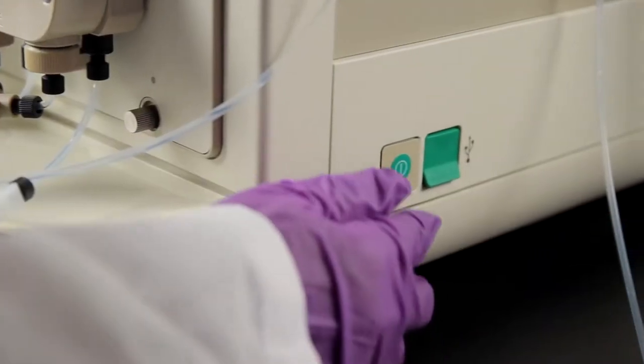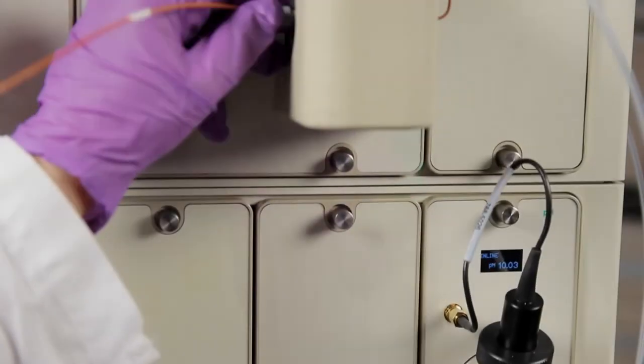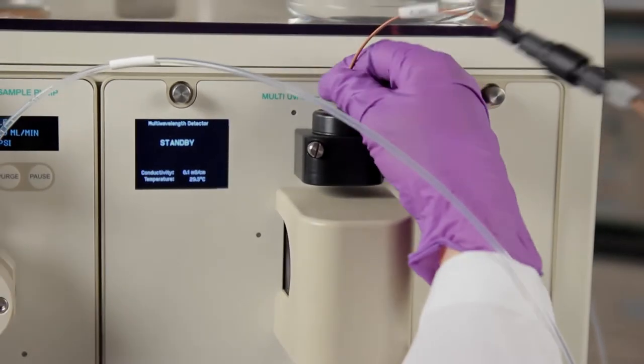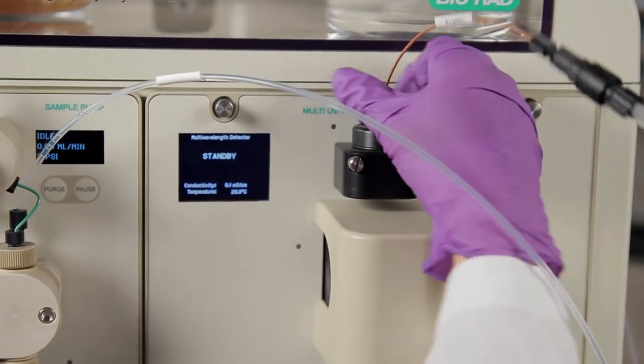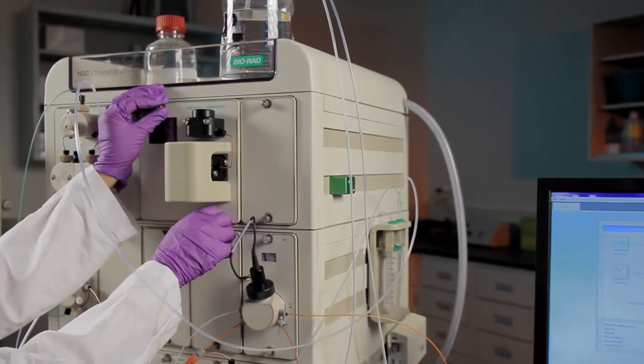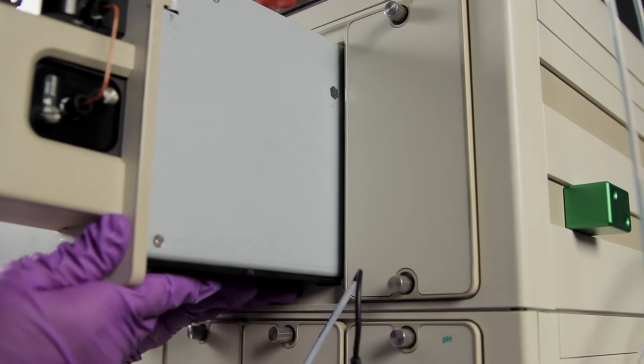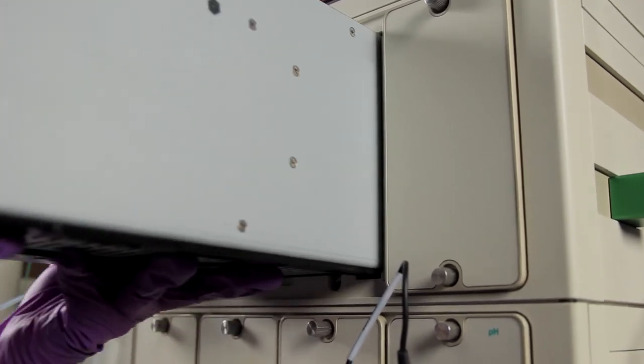To begin make sure your NGC chromatography system is shut down. Next, disconnect the inlet tubing line to the UV cell and the outlet tubing line from the conductivity monitor. Loosen the screws on the front of the module then firmly grasp the screws and slide the module out of the NGC.